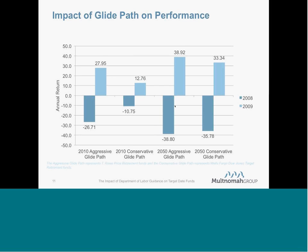The impact of glide path performance has a significant impact in the short term. Glide path will also have long-term exposure differences, but over massive market cycles those tend to balance out. However, in shorter periods the differences can be dramatic. We compared an aggressive glide path product — T. Rowe Price — to a conservative one — Wells Fargo Dow Jones target retirement funds — over two calendar years experiencing the highest divergence of performance: 2008, where we saw tremendous unraveling of the equity market, and the 2009 recovery that followed.